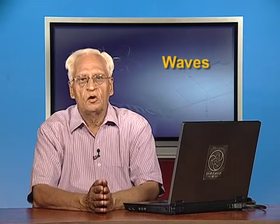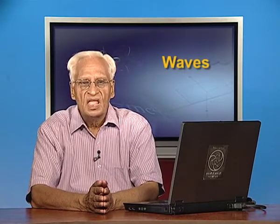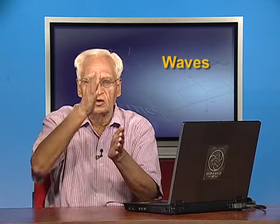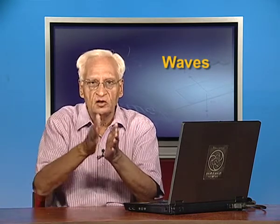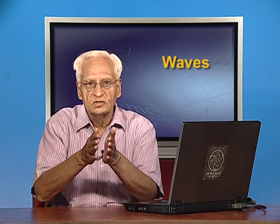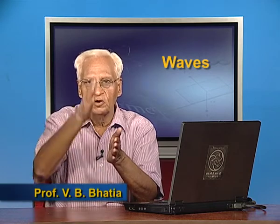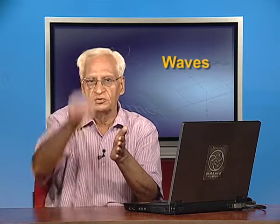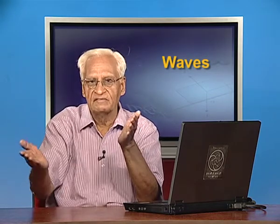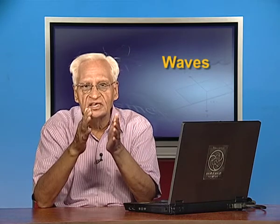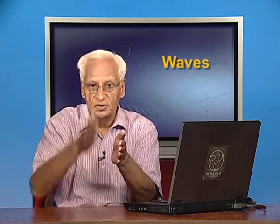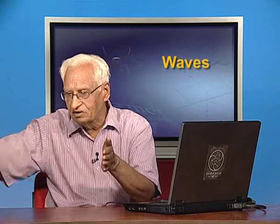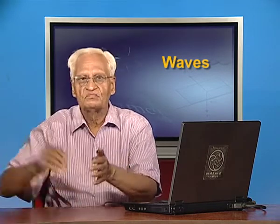This is the second lecture on waves. In the first lecture, we learnt the distinction between an oscillation and a wave. An oscillation is one in which the particle does not leave its mean position, but simply oscillates about its mean position, either this way or that way. Whereas a wave is a disturbance which, because of the oscillation, travels in the medium and carries energy with it.